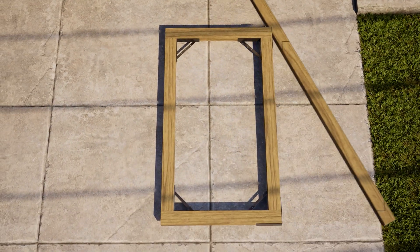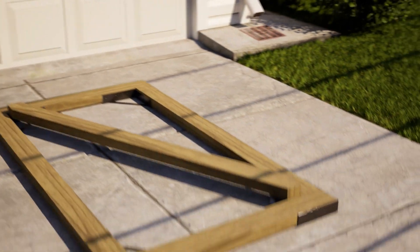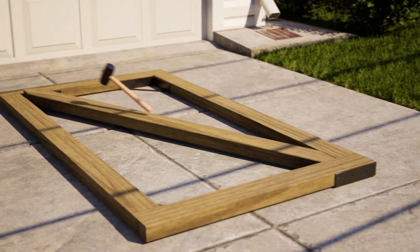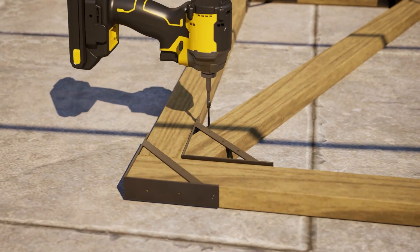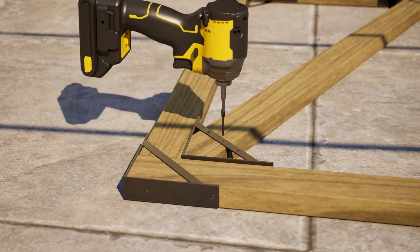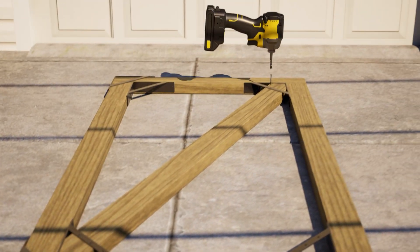Cut the cross member to size and place it inside the frame on its correct angle. You may need to tap the ends with a rubber mallet to get the cross member to fit. Then flip the frame over and fasten the cross member to the bracket gussets with the wood screws provided.